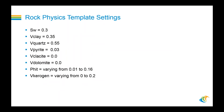Let's talk about the rock physics template settings, since we are going to use a rock physics template in this interpretation. We had several constant values set: nominal values for saturation, clay volume, quartz volume, pyrite volume, calcite volume, and dolomite volume. Two properties were varied: porosity from 0.01 to 0.16, and kerogen volume from 0 to 0.2.